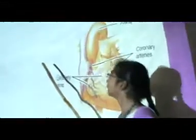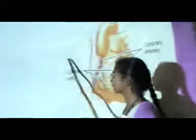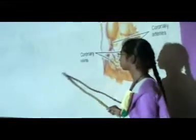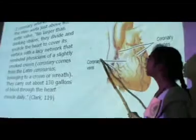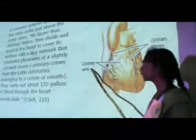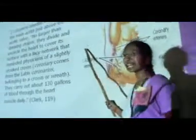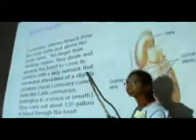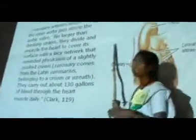The main blood supply to the heart is through the coronary arteries. They look like small straws that we see every day. This is the appearance of the coronary arteries.